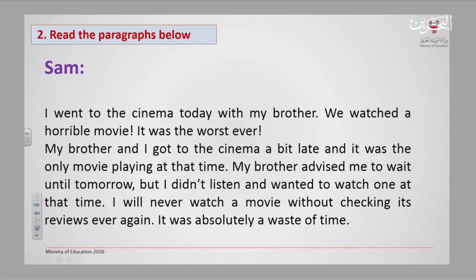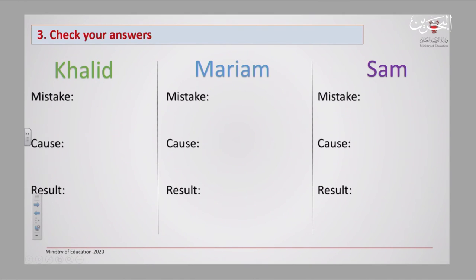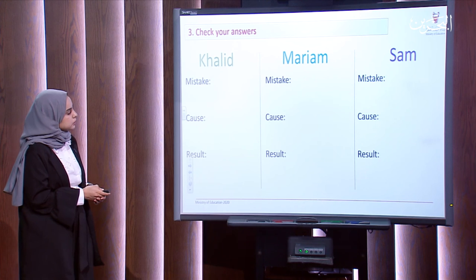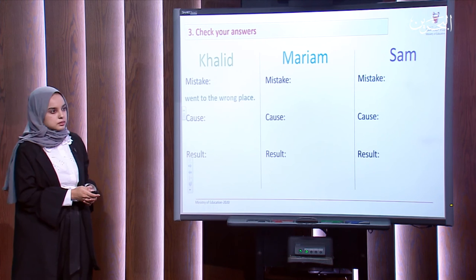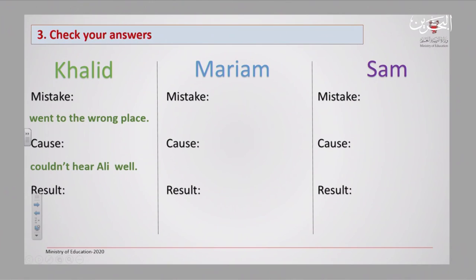Now let us see the answer for Khaled's paragraph. What was the mistake? He went to the wrong place. Why did he go to the wrong place? Because he didn't hear Ali well. And as a result of that mistake, he went to the restaurant instead of the cafe.